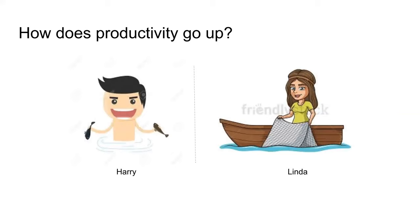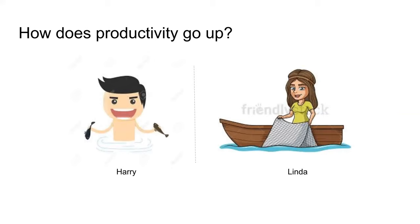To explain how productivity goes up, the tutor introduces an example from the book 'The Bitcoin Standard.' There are two people: Harry and Linda, set 10,000 years ago. Harry fishes eight hours every day, catches one fish per hour, gets eight fish total, and consumes them all — seven days a week, 365 days a year.